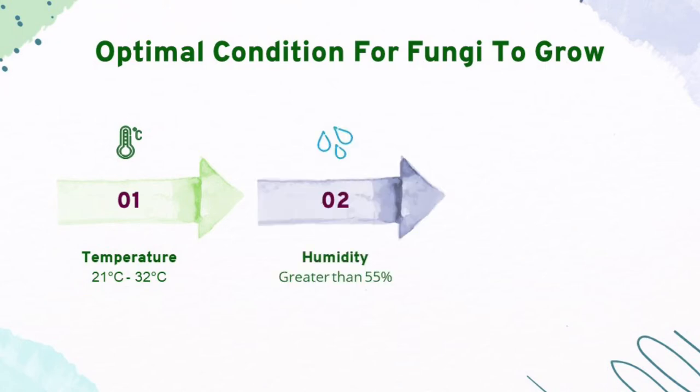Optimal condition for fungi to grow. Firstly, temperature between 21 degrees Celsius and 32 degrees Celsius. Secondly, humidity greater than 55%. And lastly, light is not required for fungi to grow. The end.